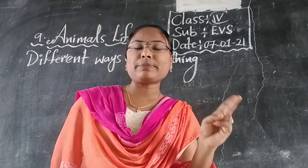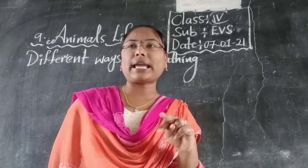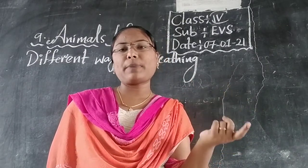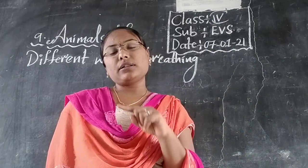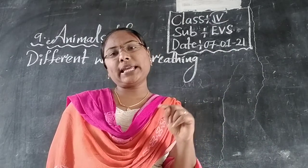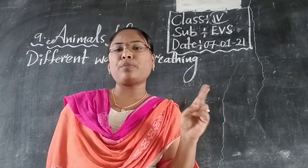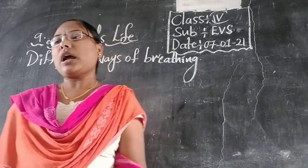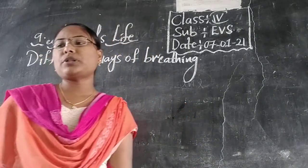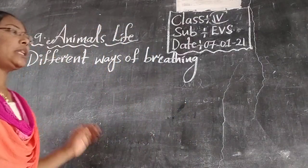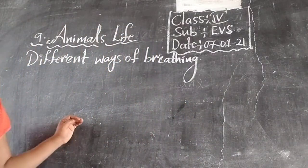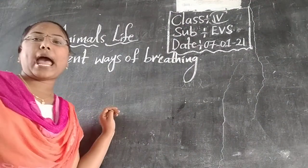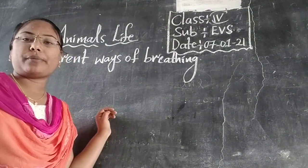What are omnivores? Omnivores means they eat both plants, green plants, and flesh — they eat both. They are called omnivores. For example, which animals eat both? Birds, cats, dogs, etc.